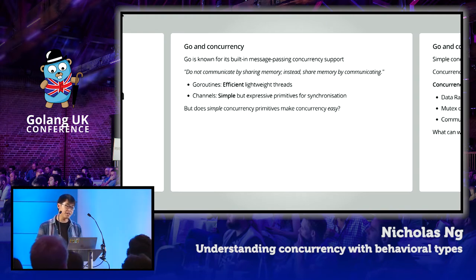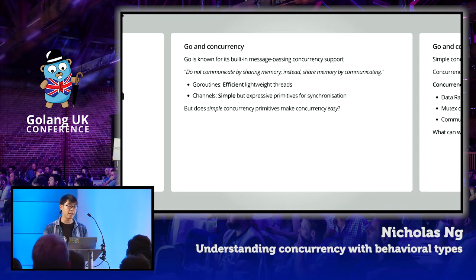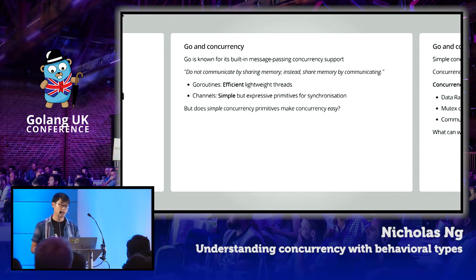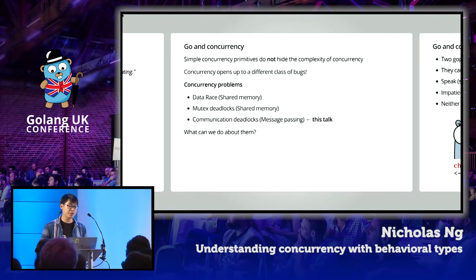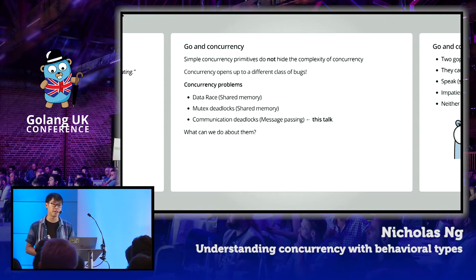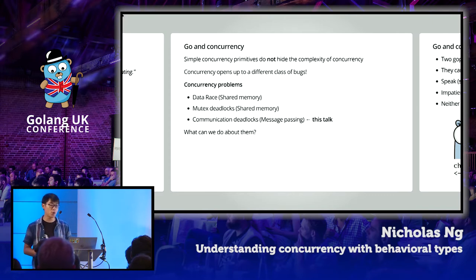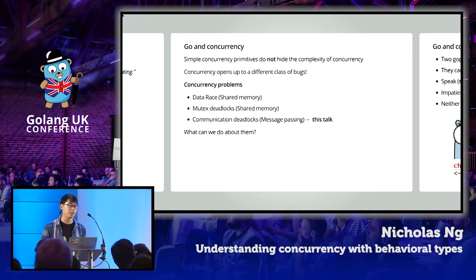The concurrency model and primitives in Go are resoundingly simple, and with just a few lines of code you can already get a concurrent program up and running. But here's the question: does having simple concurrency primitives make using concurrency easier? I think the answer is no, because having simple concurrency primitives doesn't really hide the inherent complexities and pitfalls of concurrency. Adding concurrency to your program can open up a completely different class of bugs not usually found in sequential programs.